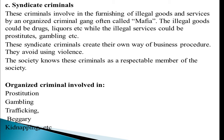An important point about syndicate criminals is that they are considered respectable citizens of society — people do not recognize them as criminals. They live good lives publicly, but secretly operate in their designated areas, running liquor dens or drug operations and transporting and selling these in different areas. Organized criminals in general are involved in prostitution, gambling, human trafficking, drug trafficking, beggary, kidnapping, and dacoity.